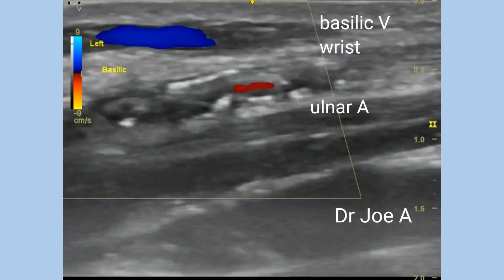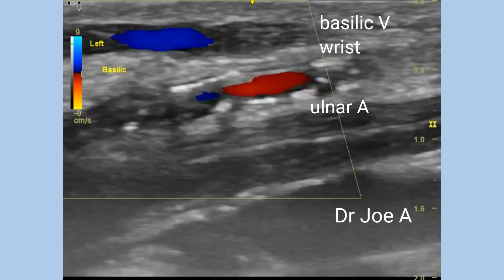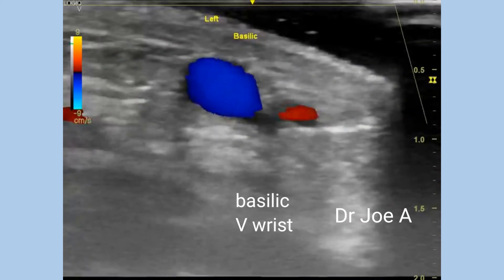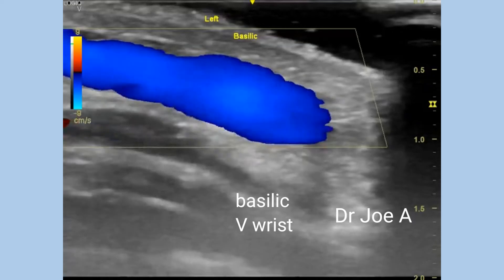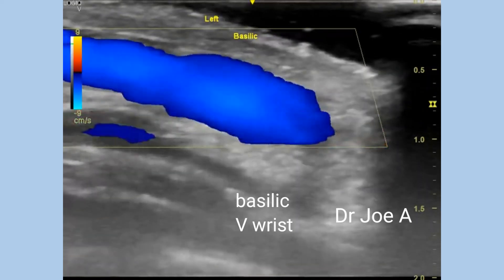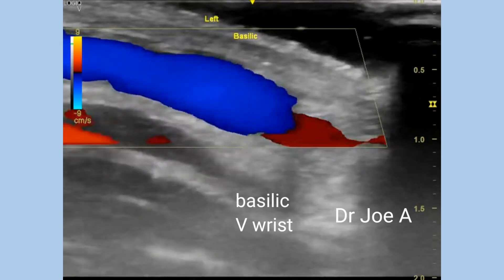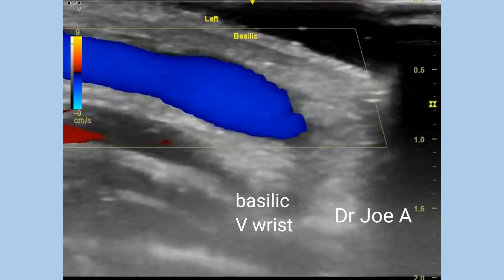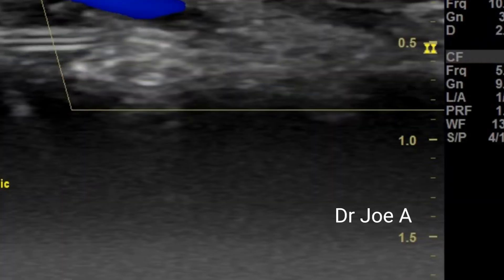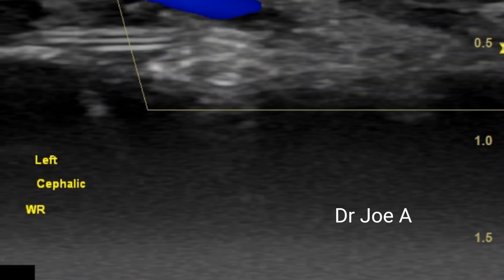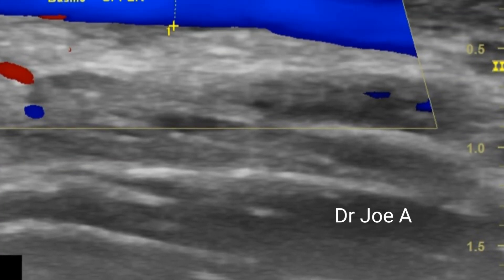The cephalic vein also appears normal and shows normal flow throughout. The depth and diameter of these vessels is also measured before creating the AV fistula.